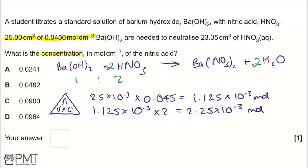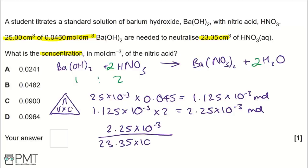Finally, working out concentration: 2.25 × 10⁻³ moles divided by 23.35 × 10⁻³ dm³ gives a concentration of 0.0964 mol dm⁻³. This matches option D. To get the mark, we need to write D in the answer box.